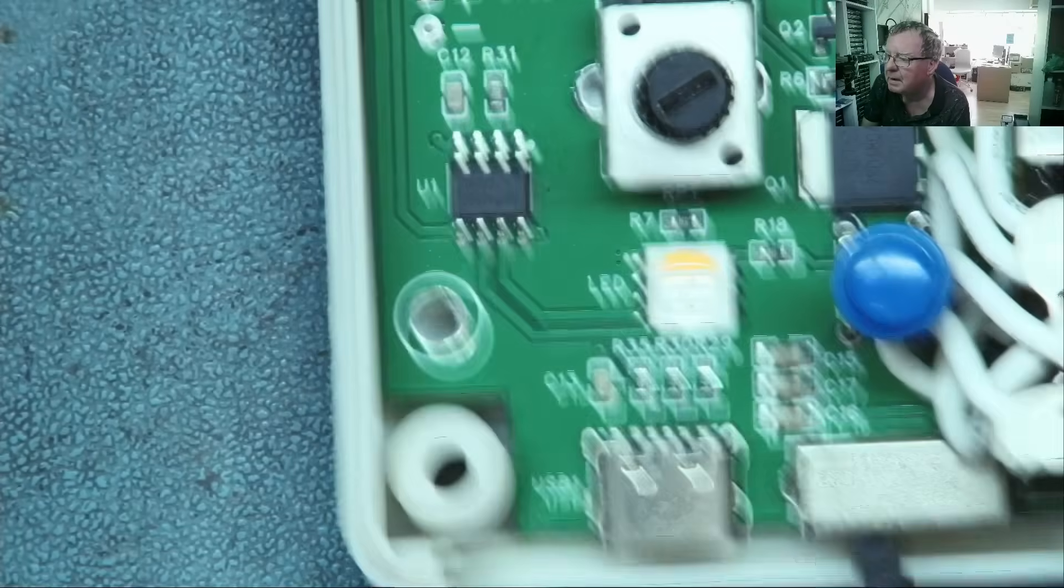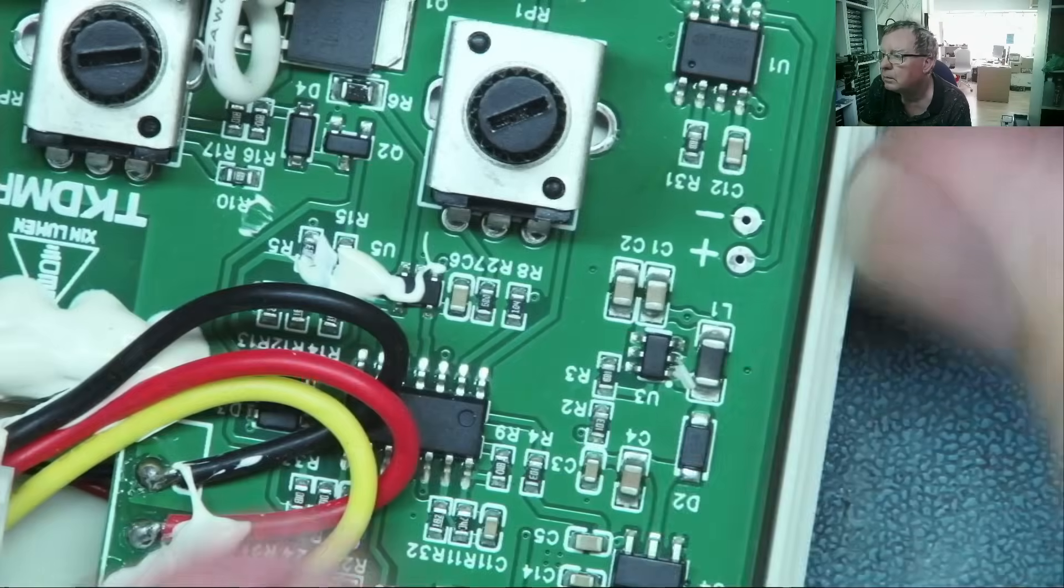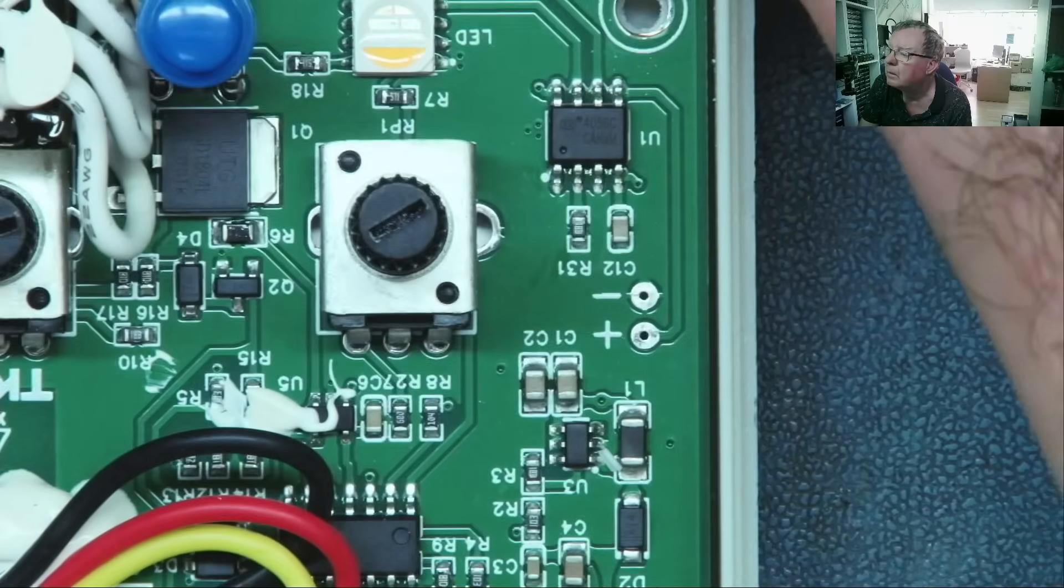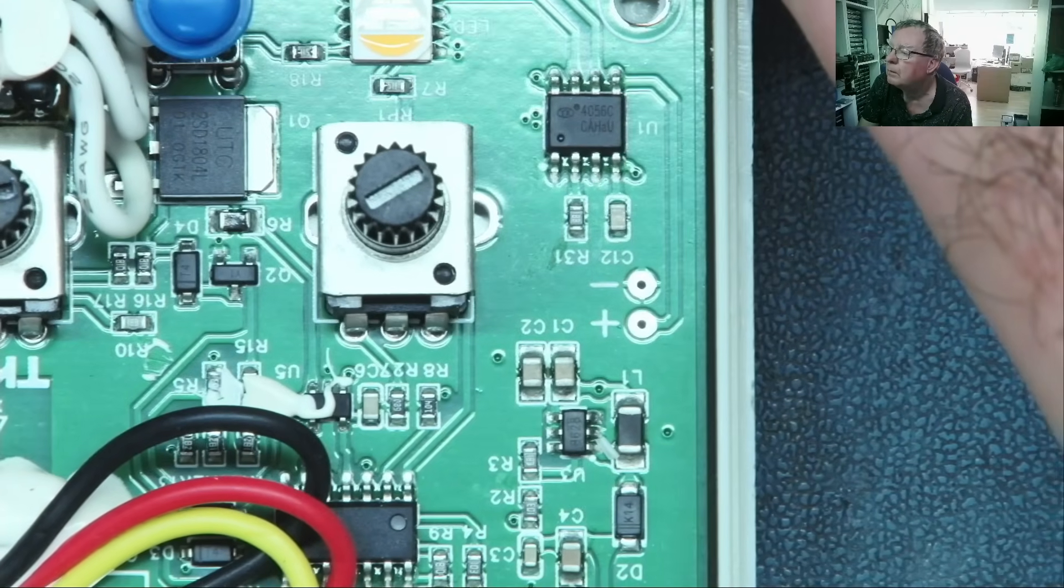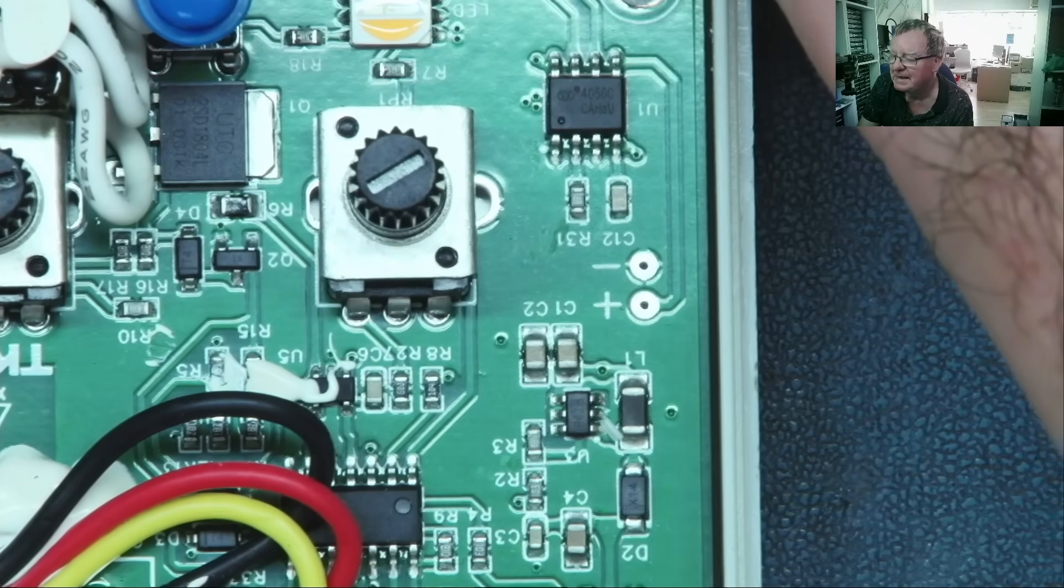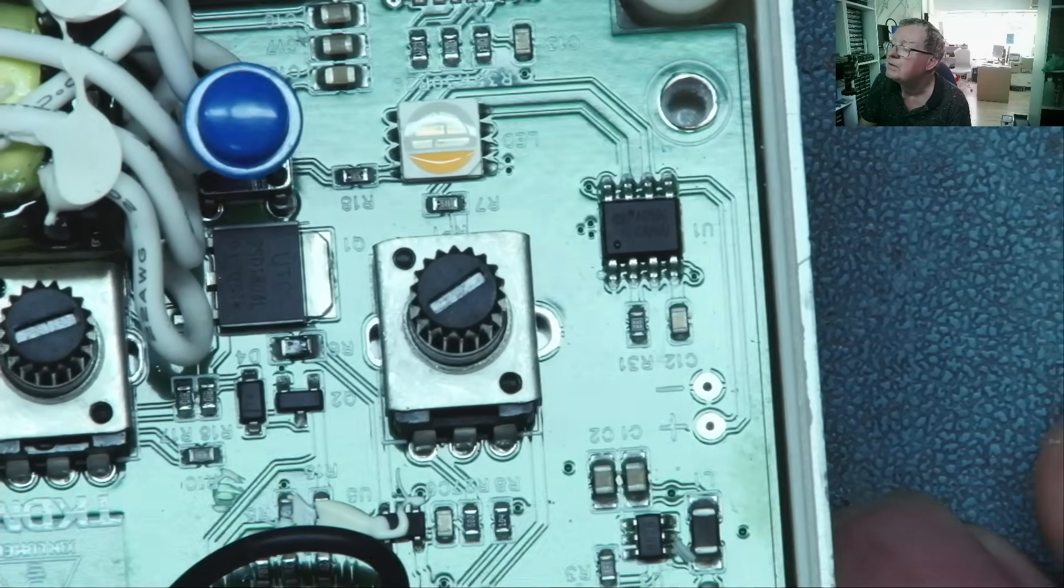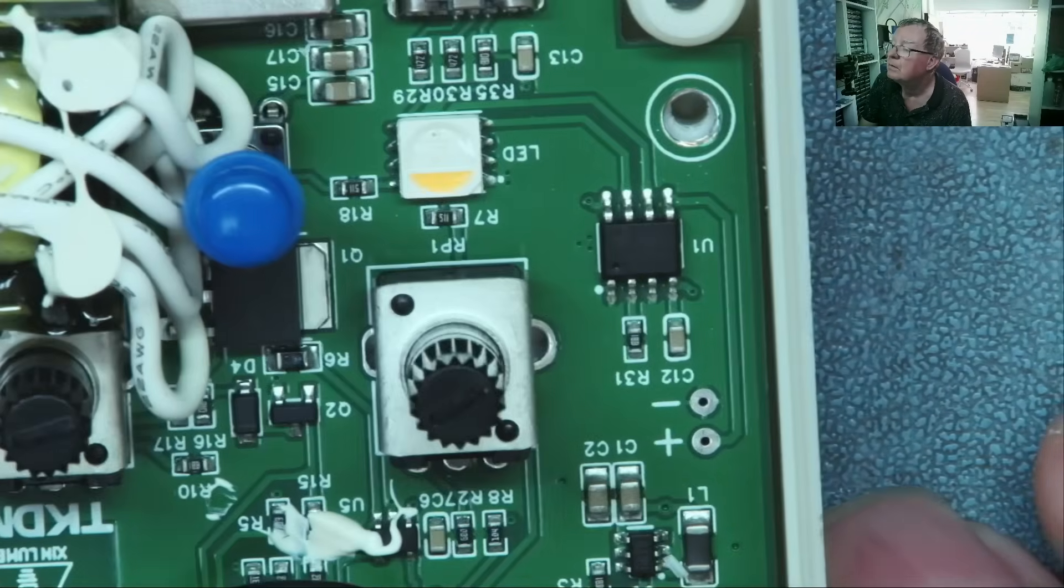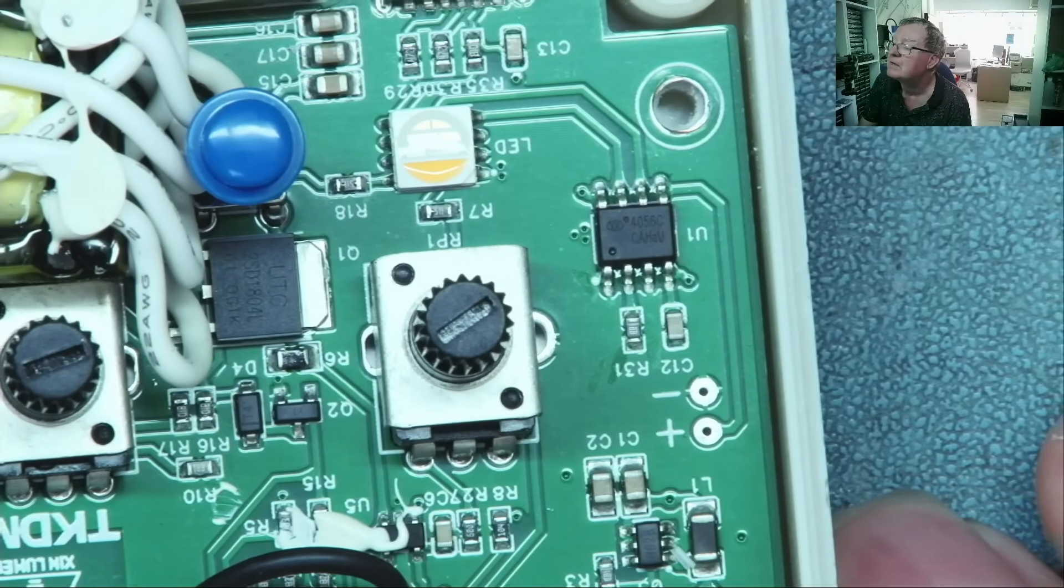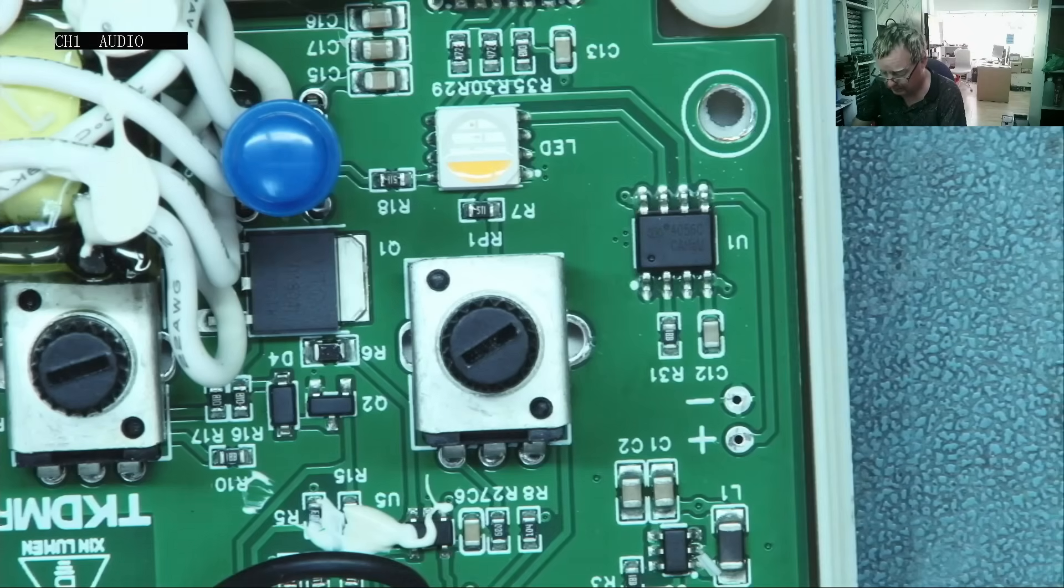A couple of chips on here. LM324, quad op amp. And this one, 4056C. Sounds like a CMOS chip, but I'm sure it isn't. Yeah, I'm not finding anything for that. Well, it has a little logo, which I think says TX. Or YX. I think it is. YX4056C. Nope, nothing for that.